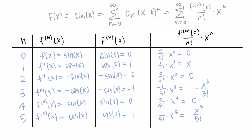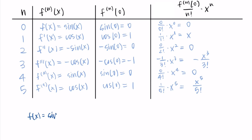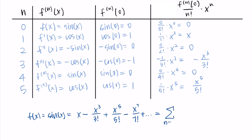Every other term is zero, so only the first, third, and fifth terms contribute. We can write that sine of x equals x minus x cubed over three factorial plus x to the fifth over five factorial, and the next term would be x to the seventh over seven factorial, and so on — continuing infinitely. We can write this compactly as the sum from n equals zero to infinity of negative one to the n over (2n plus one) factorial times x to the (2n plus one). You can verify by plugging in n equals zero, then n equals one to check the first and second terms.